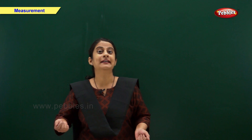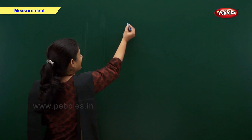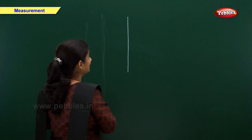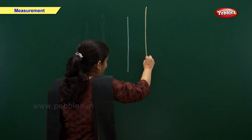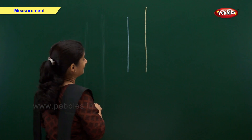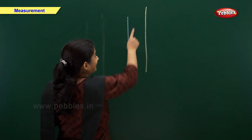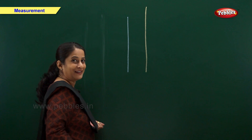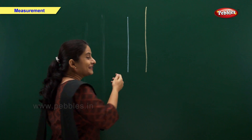Now let us see taller and shorter. A blue line and a yellow line. Which line is taller? Right. Yellow line is taller. Blue line is shorter.